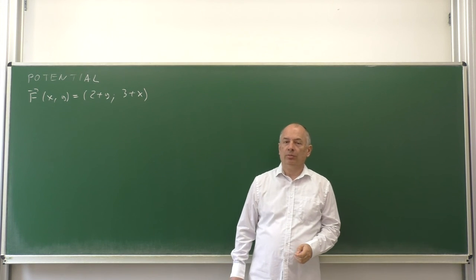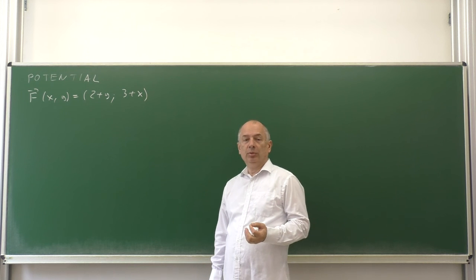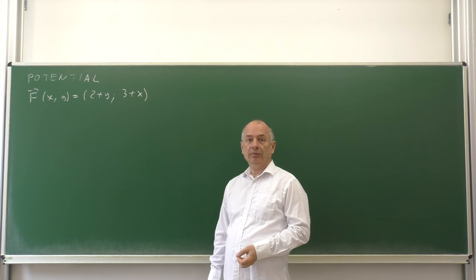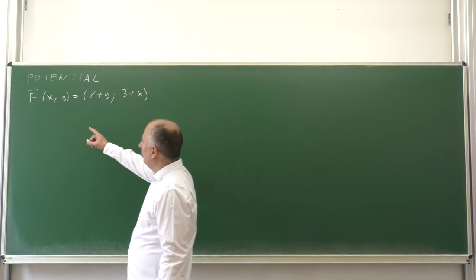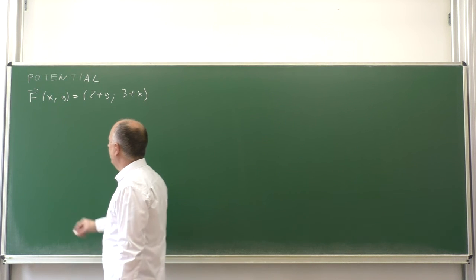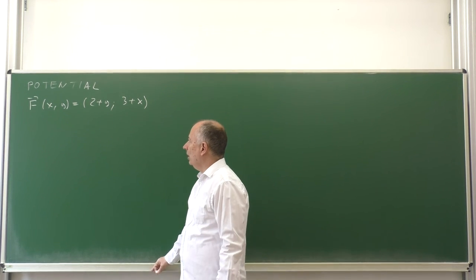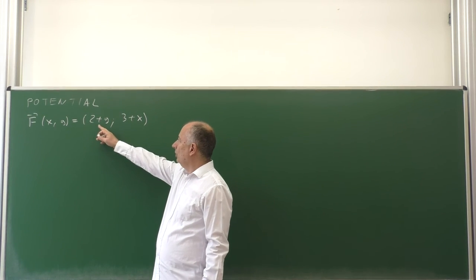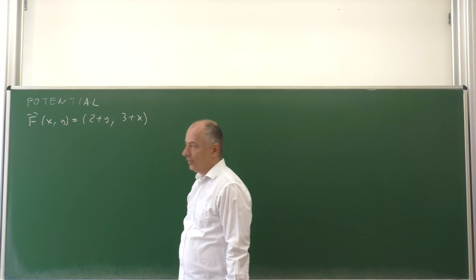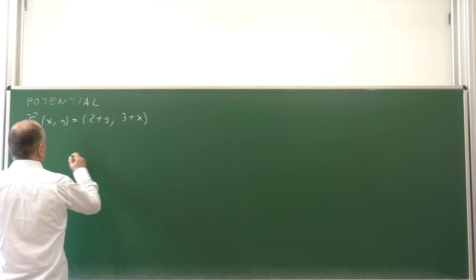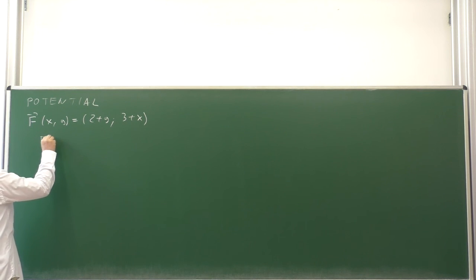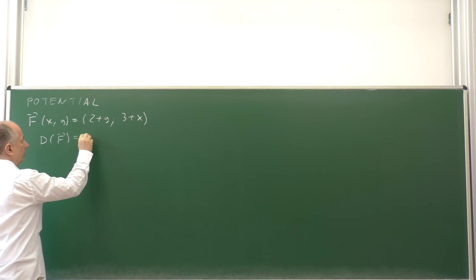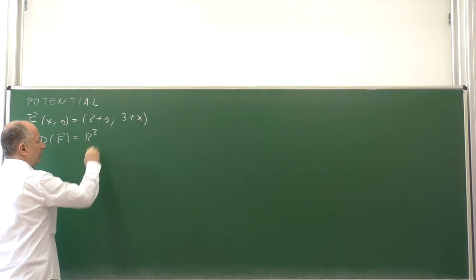In this section I am going to show you how to find potential for a conservative vector field. Consider the following vector field F at the point (x,y) having the components (2+y, 3+x). We see that these two expressions are defined for all real x and y, so the domain of definition is the entire plane R2.